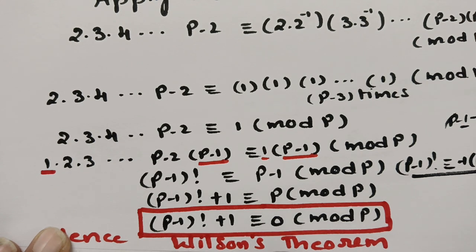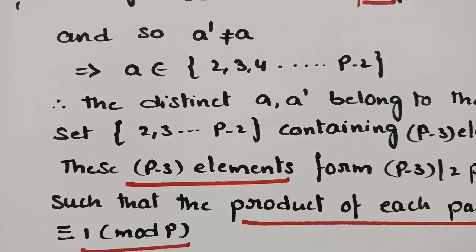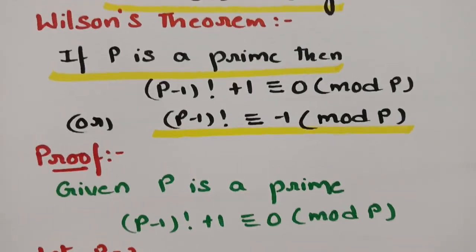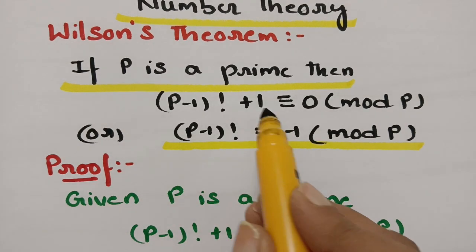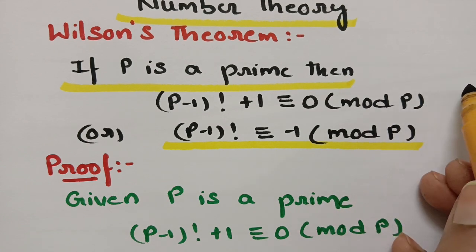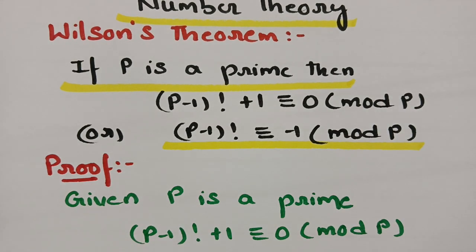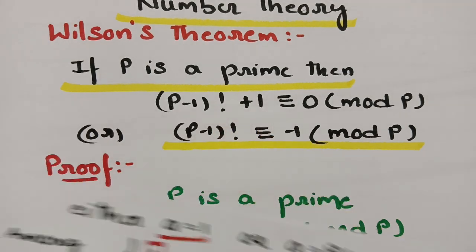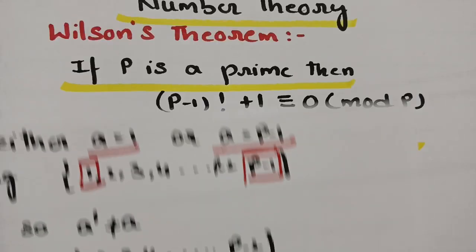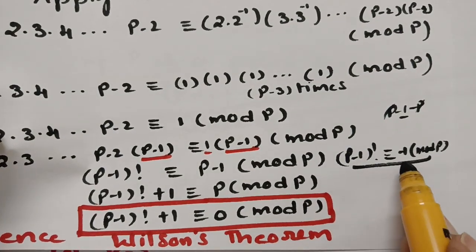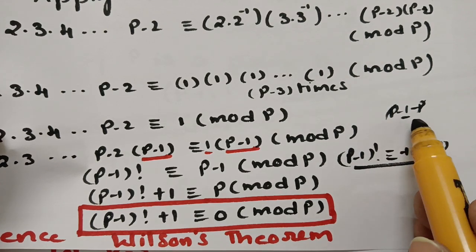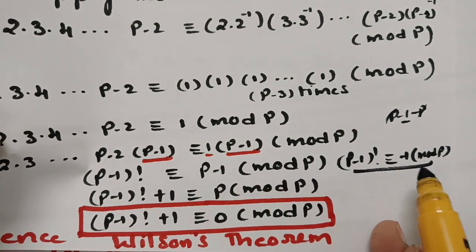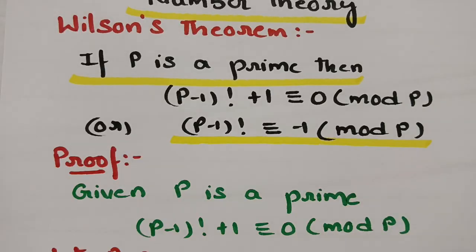Therefore, this is the Wilson theorem. We have shown both forms: (p−1)! + 1 ≡ 0 (mod p), and equivalently, (p−1)! ≡ −1 (mod p), obtained by taking the difference p−1−p = −1. This completes the proof of Wilson's theorem.